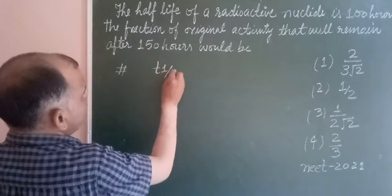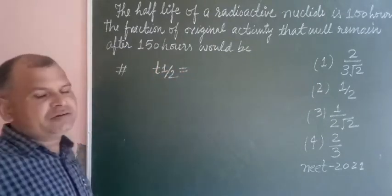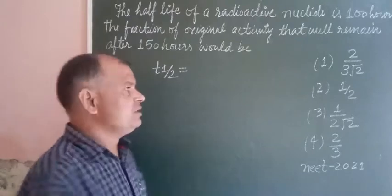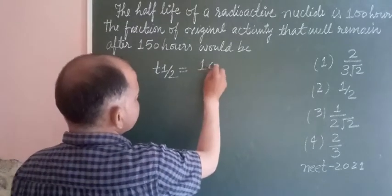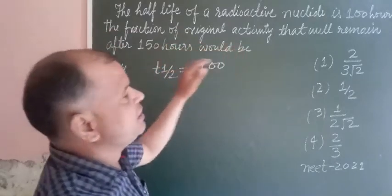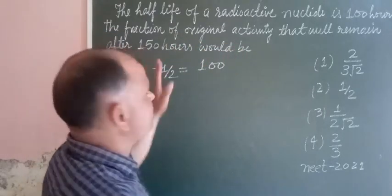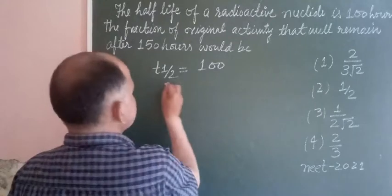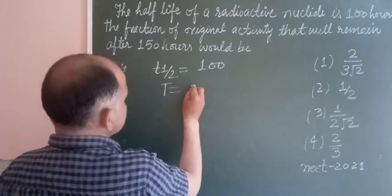We denote the half-life of a radioactive substance by T1/2, which is 100 hours. The fraction of original activity that will remain after time T, which is given here as 150 hours, is what we need to find.